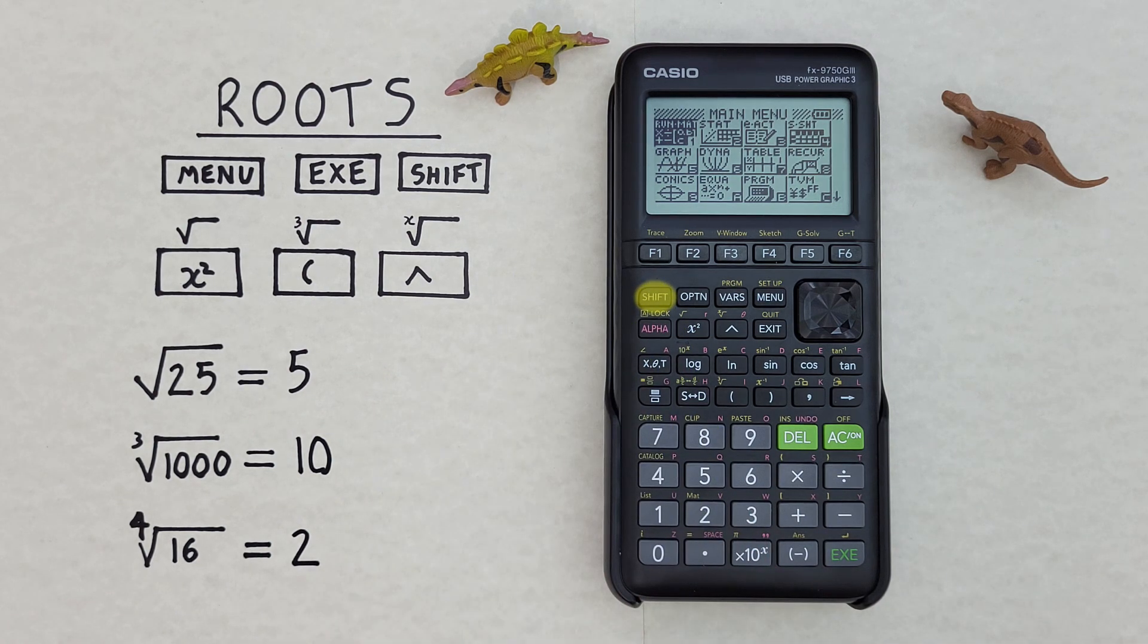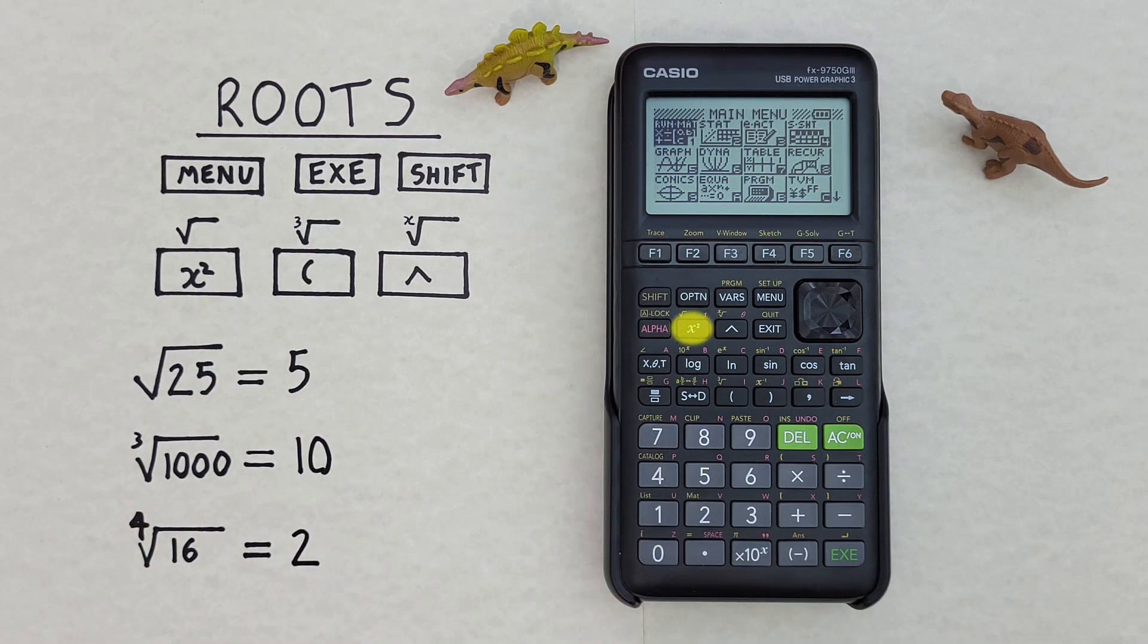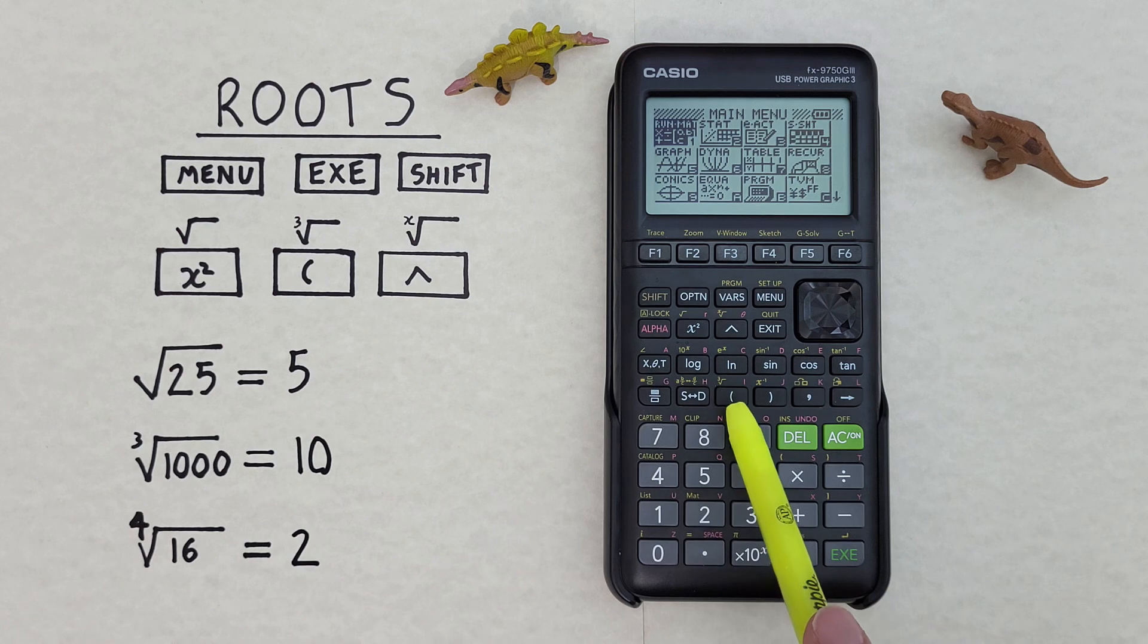The x squared with the shift function of square root key that looks like this, located here. The left bracket key with the shift function of cube root that looks like this, located here.